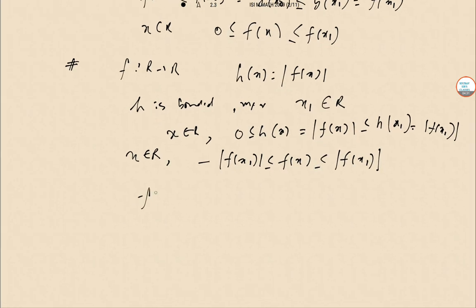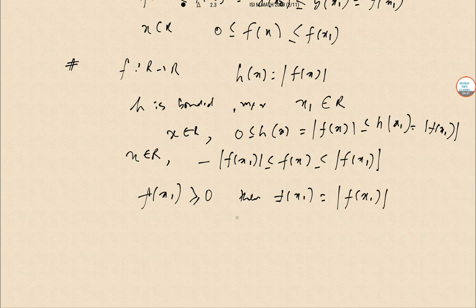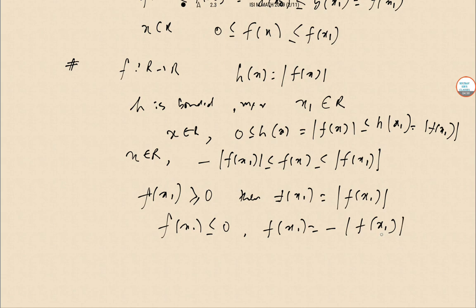Now if f(x₁) ≥ 0, then f(x₁) = |f(x₁)| and f attains its maximum value. If f(x₁) ≤ 0, then f(x₁) = −|f(x₁)| and f attains its minimum value. So in either case f attains a maximum or a minimum.